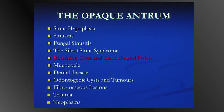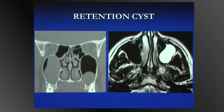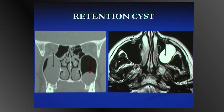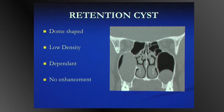The retention cyst is an extremely common sequel of inflammatory sinus disease. All it is, is obstruction of a single seromucinous gland — a blocked gland — so it's basically a bag of fluid on imaging. They present as low-density, dome-shaped structures, usually within the floor of the antrum. They can move around a bit, but the imaging characteristics on both CT and MR are of bags of fluid. Because they are bags of fluid, they do not enhance. Retention cysts are easy: dome-shaped, low-density, dependent within the sinus, and they don't enhance.